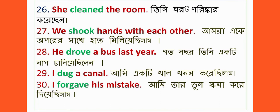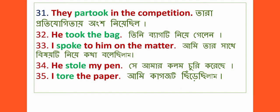Number twenty-seven: We shook hands with each other. Number twenty-eight: He dropped a bus last year. Number twenty-nine: I dug a canal. Number thirty: I forgave his mistake. Number thirty-one: They partook in the competition.